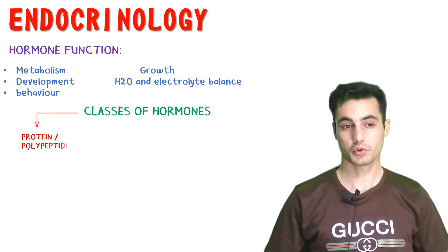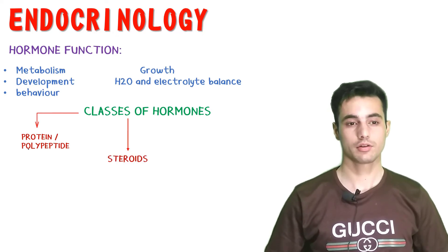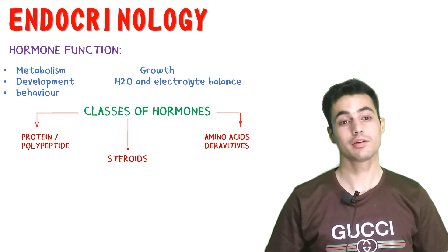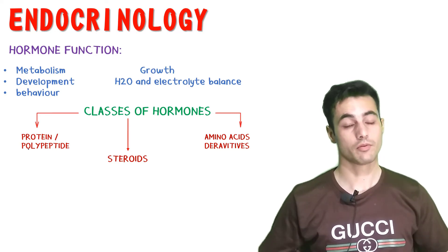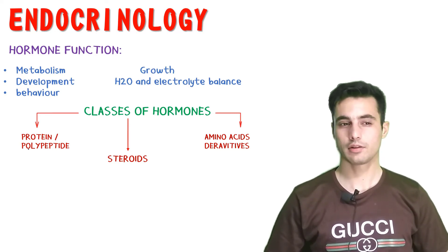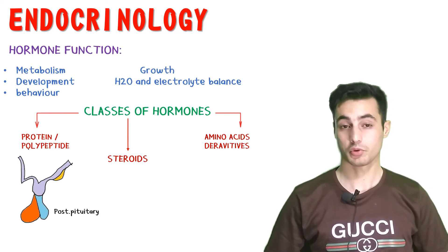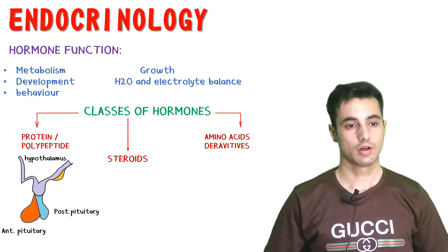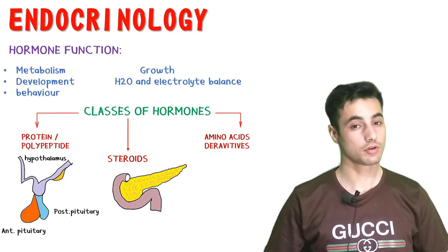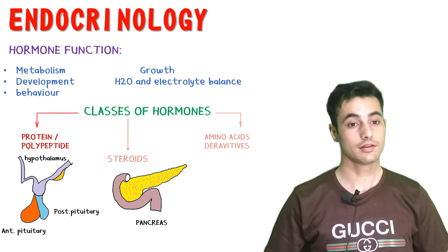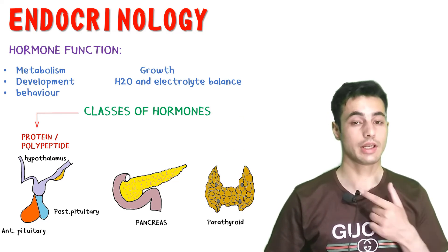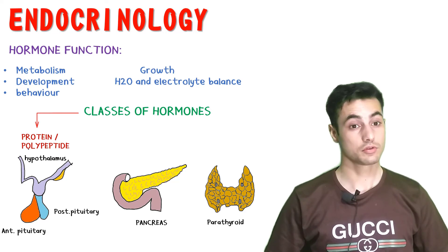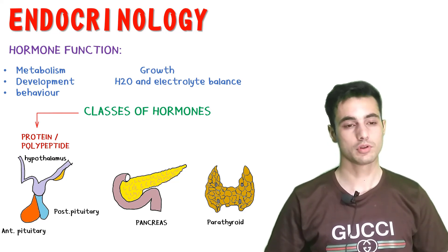Hormones are divided into three major classes: proteins and polypeptides, steroids, and amino acid derivatives. Hormones secreted by the hypothalamus, posterior pituitary, anterior pituitary, and the pancreas are protein or polypeptide in nature. The parathyroid gland, situated behind the thyroid gland, secretes parathyroid hormone, which is also a protein or polypeptide.